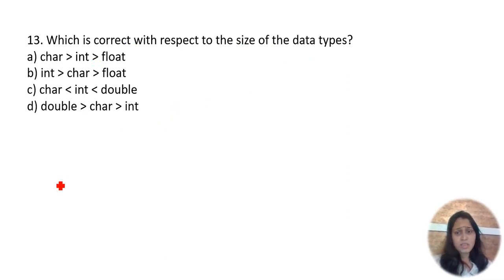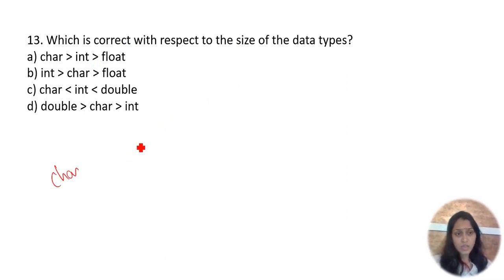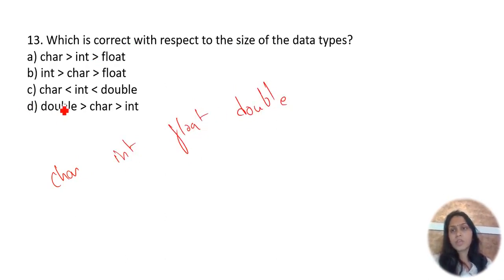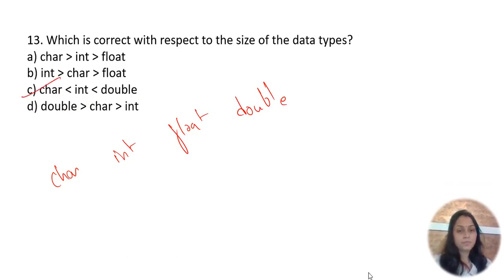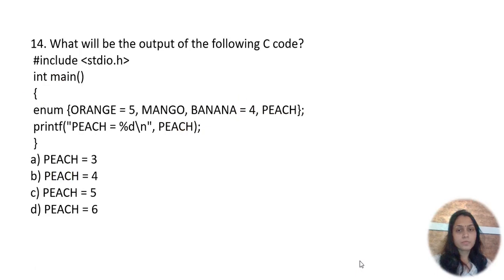Which one is correct with respect to the size of data types? It is very easy — character has the smallest size, next is integer, then float, then double. So char < int < double, making option C the correct one.